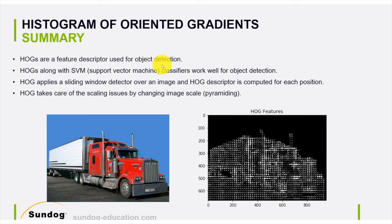To summarize: HOG features are a feature descriptor used for object detection. They are very powerful when coupled with a Support Vector Machine classifier. HOG applies a sliding window detector over an image, and the descriptor is computed for each position. HOG also handles scaling issues via image scale pyramiding — scaling up and down — so you don't have to worry about different object scales. It's not dependent on color, making it a very powerful and compact way of representing images. I hope you enjoyed it — see you in the next section!